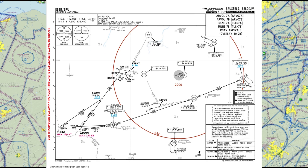That covers basically all the relevant information on this chart, so let's go over what it all means in the grand scheme of things. Let's say you have been assigned the Arval 7 Alpha arrival by ATC. You'll have to make sure that once you cross the Arval waypoint — your initial waypoint — your speed is at a maximum of 250 knots. From there you continue your descent via this route, making sure you don't descend below flight level 90 before Akovi, and below flight level 70 before Kirky. Then from Kirky you transition to the approach chart, which we'll discuss in the next part of this series.